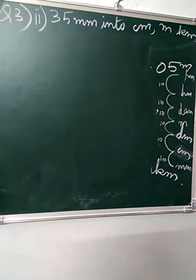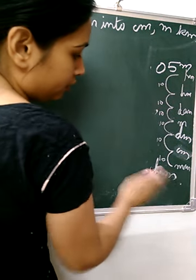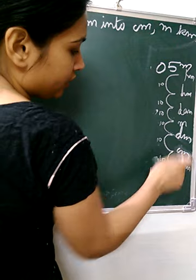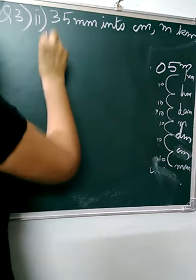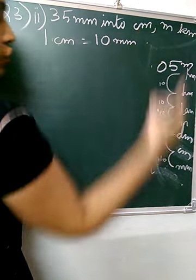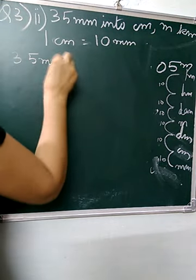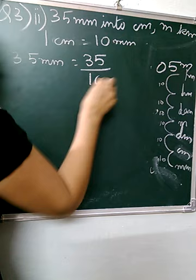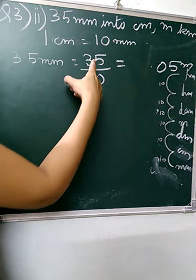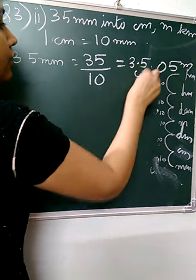Starting with the second part of question number 3. We have to convert 35 millimeters into centimeter, kilometer, and meter. First we start with centimeter. We check millimeter and centimeter — just one step, so 1 zero. So 1 centimeter is equal to 10 millimeters. Here also small is getting converted into big, so we divide. So 35 millimeters divided by 10 — only one decimal place — gives us 3.5 centimeters.